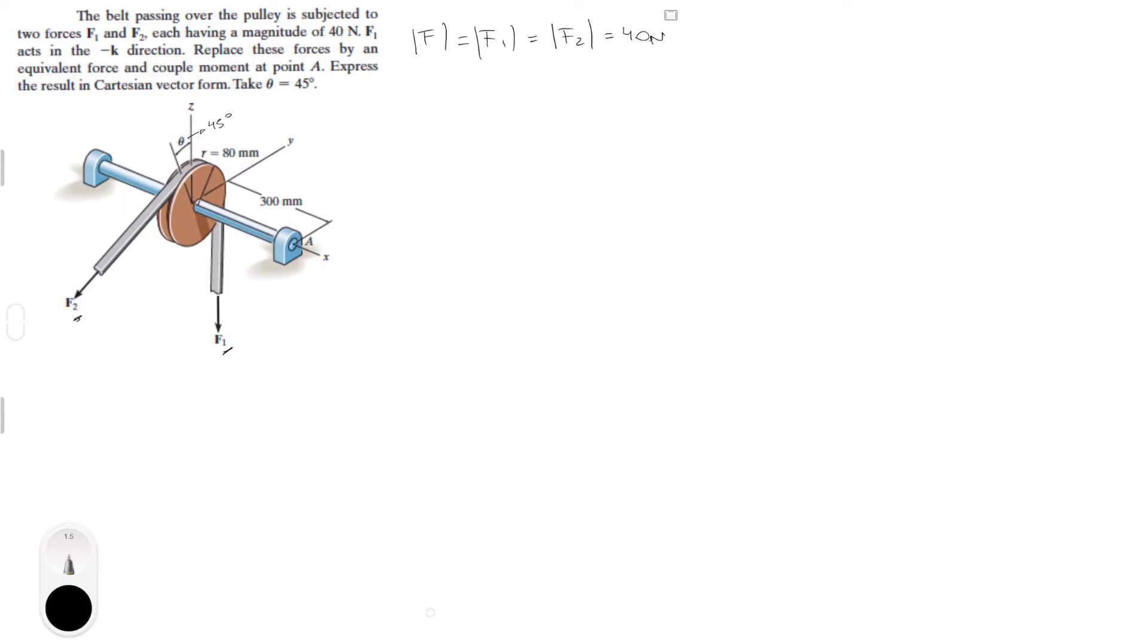First, we need to find the Cartesian vector form of both vectors. The resultant force is equal to F1 plus F2. F1 equals negative 40K because it's going straight down in the Z axis. Now we need to find F2, and we're going to do that with some simple trigonometry.